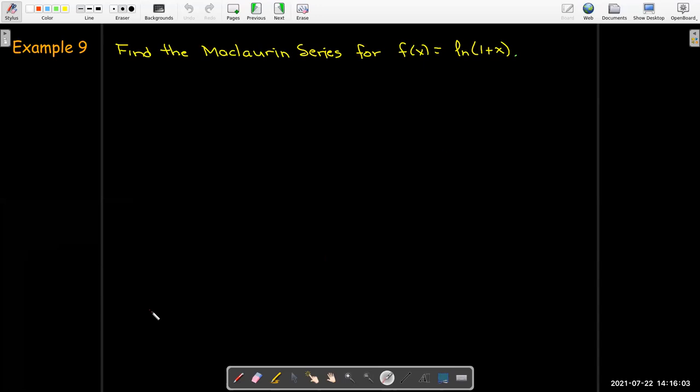Let's find the Maclaurin series for f of x equals the natural log of 1 plus x. We could use the definition and calculate derivatives. It's not really that hard, but let's remember some of the things that we've done before. We started off with this idea of the geometric series in u equaling 1 over 1 minus u.